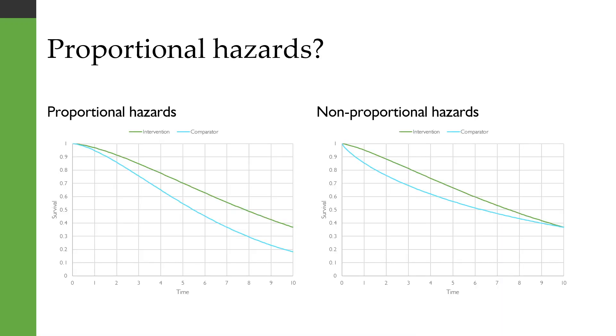Well, what's a proportional hazards assumption? Here I've got two graphs. On the left we have survival curves where the proportional hazards assumption is met, and on the right we have a graph where the proportional hazards assumption is not met.